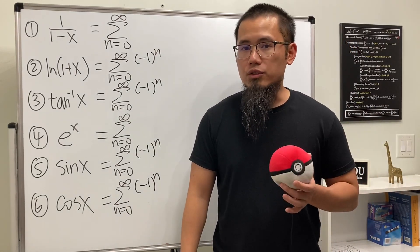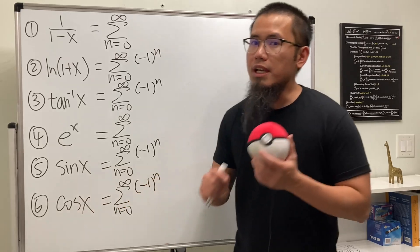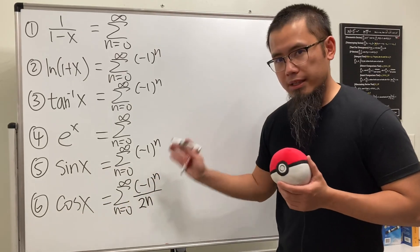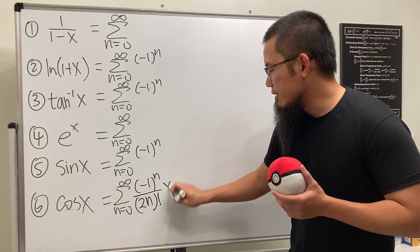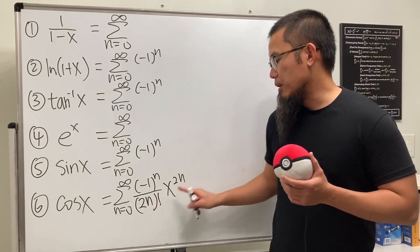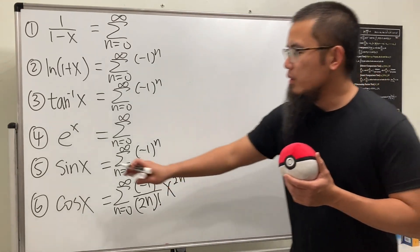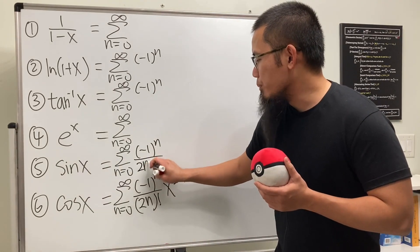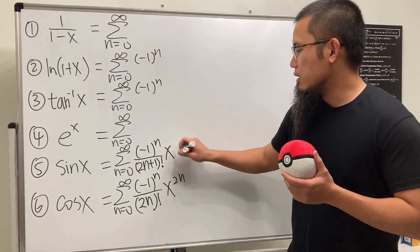We use the even/odd function property to help us out. Starting with cosine — cosine is even — so we have the even factorials on the bottom, namely (2n)!, and x to the 2n power. Notice the power matches the factorial argument. For e to the x, we do not have the factorial.